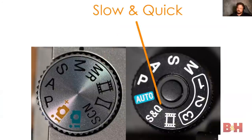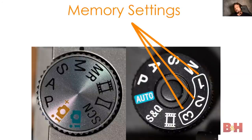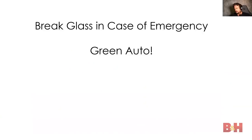You also have slow and quick on newer full-frame cameras — a video setting for slow or quick motion. Full-frame cameras have multiple memory settings you can customize. Memory recall is like break-glass-in-case-of-emergency: if nothing is working and you just need to take a picture, put it on green auto. There is nothing wrong with shooting in auto if it gives you the results you want — it overrides pretty much everything, so it's great if something is going wrong.